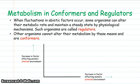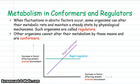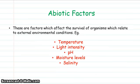Looking at metabolism in various animals, abiotic factors — factors in the environment — will always be fluctuating. Some animals can regulate their internal metabolism, maintaining homeostasis inside their bodies regardless of external conditions. Others are conformers, where their internal environment changes as a result of changes in the external environment. Abiotic factors include temperature, light intensity, pH, moisture levels, and salinity.